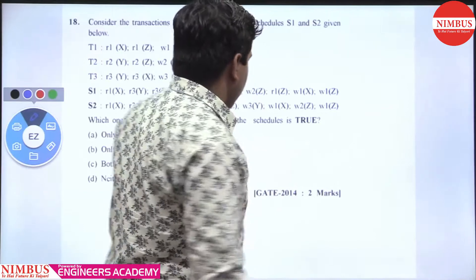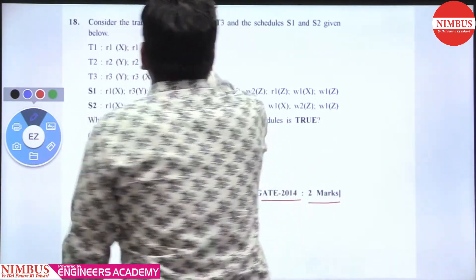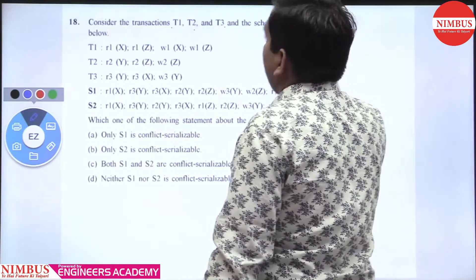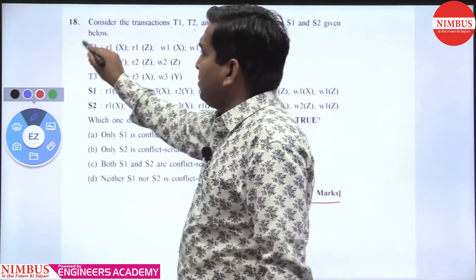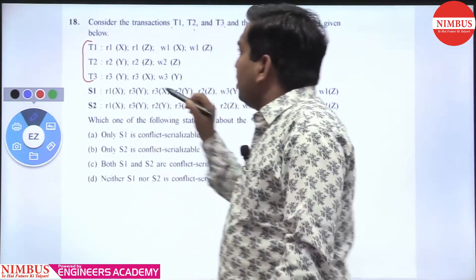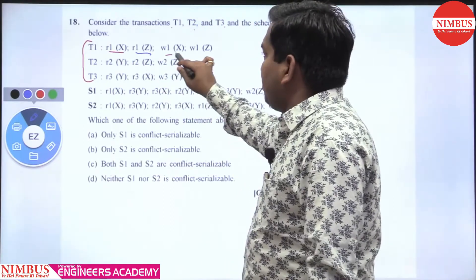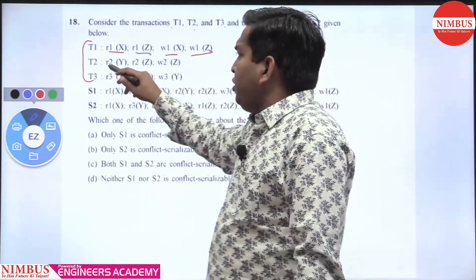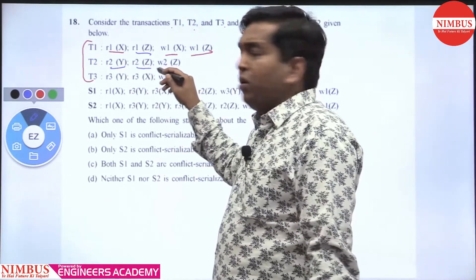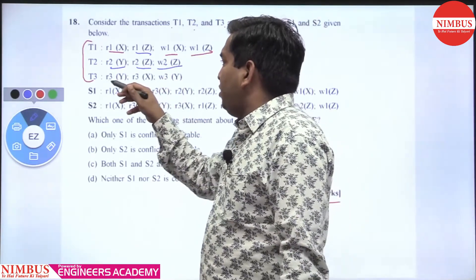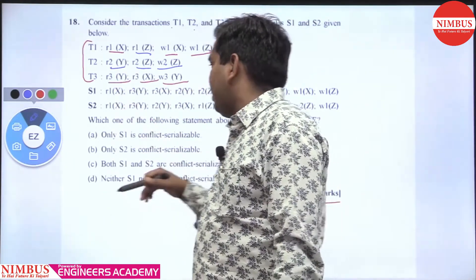Hello students. This question comes in GATE 2014, 2 marks. Consider 3 transactions T1, T2, T3 and 2 schedules given below. T1 performs read and write operations on X and Z. T2 performs read operation on Y and Z and write operation on Z. T3 performs read operation on Y and X, and write operation on Y. These are the 2 schedules given.